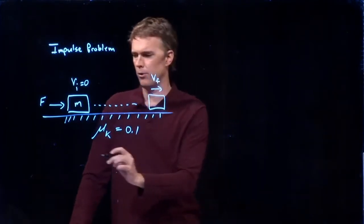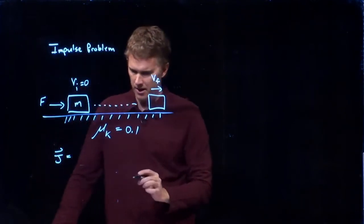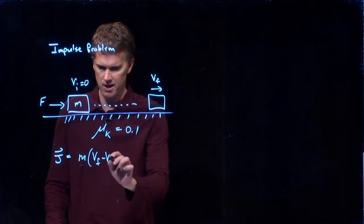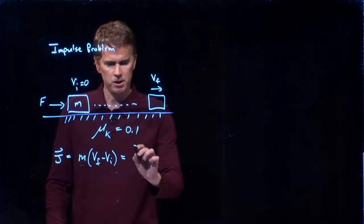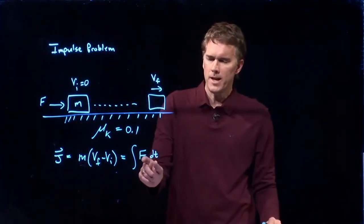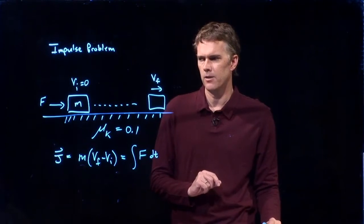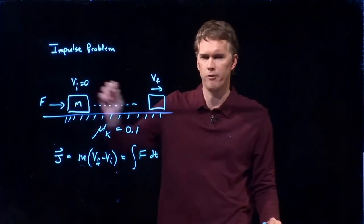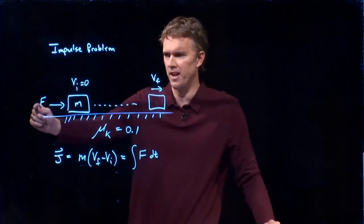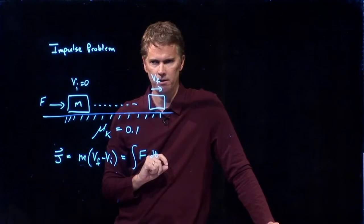Well, when we go to our impulse equation, j, what we said was this is m vf minus m vi, which is the integral of f dt. But what f do we really put in there? There's obviously more than one force at play. There is not only the pushing force, f, but there is friction that's acting against us.